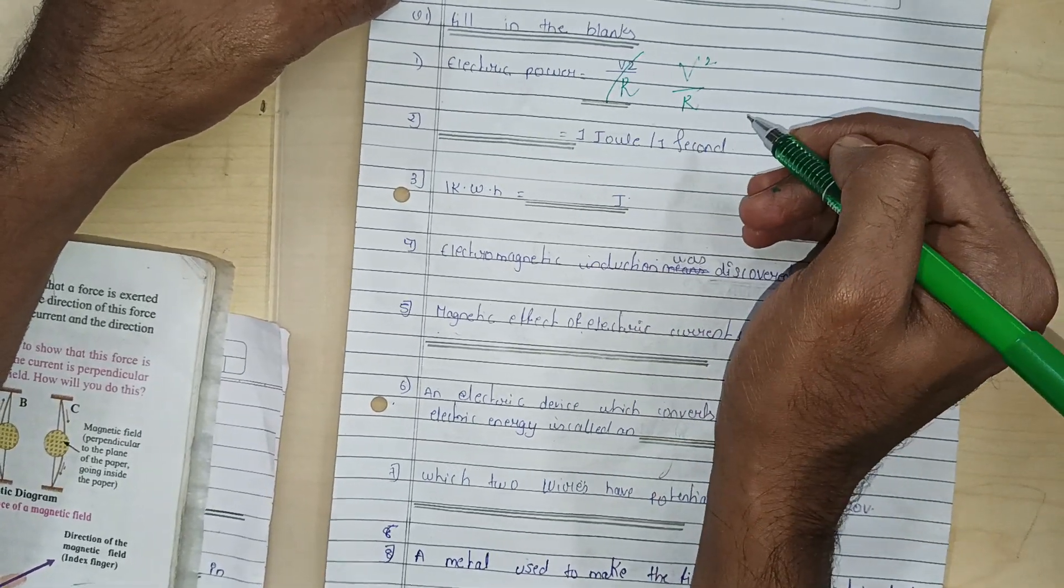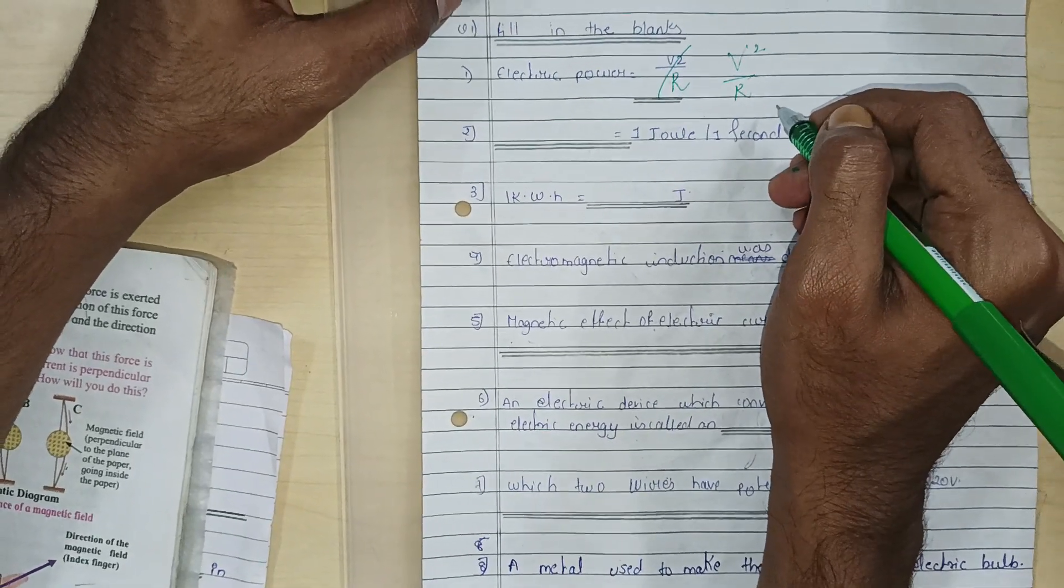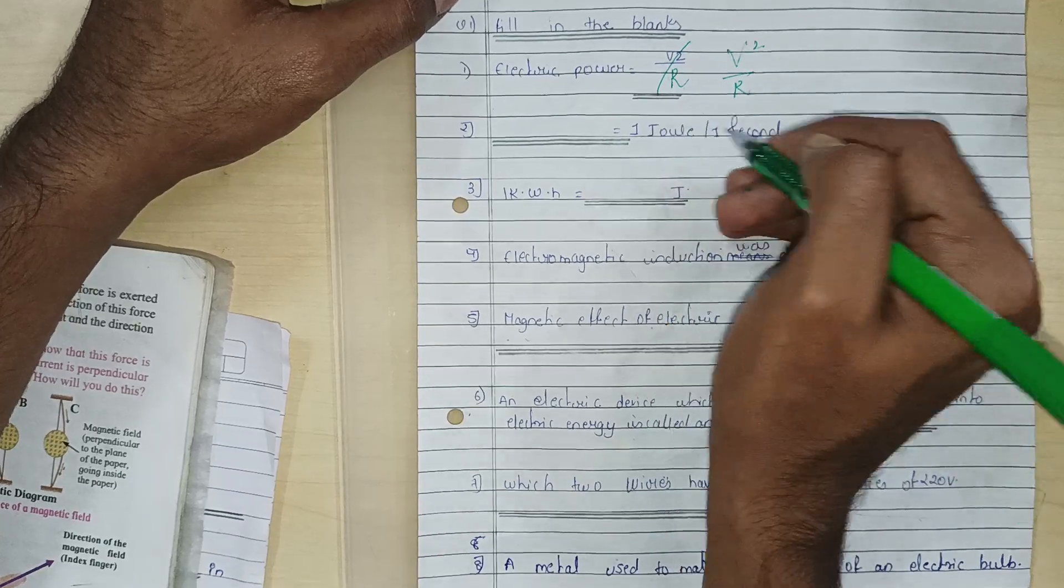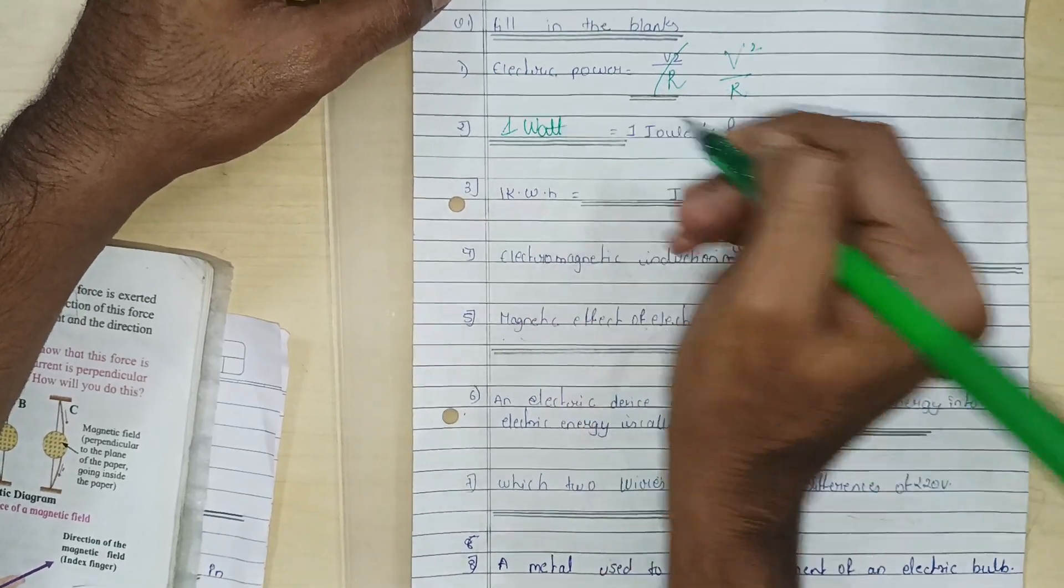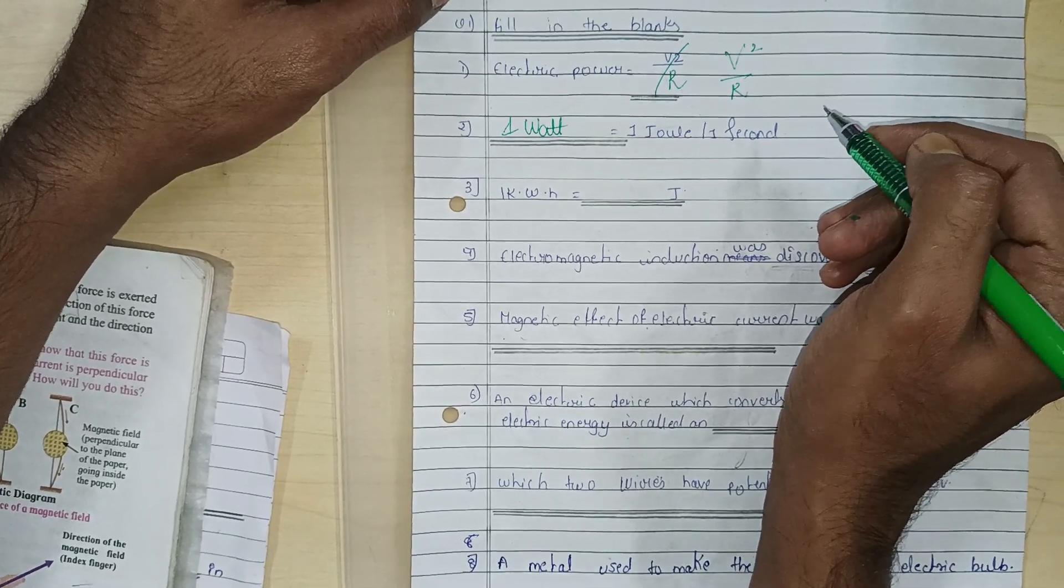Dash is equal to 1 joule per 1 second. You know what the unit of power is, right? What is the unit of power? 1 watt. So 1 watt is equal to 1 joule per second.